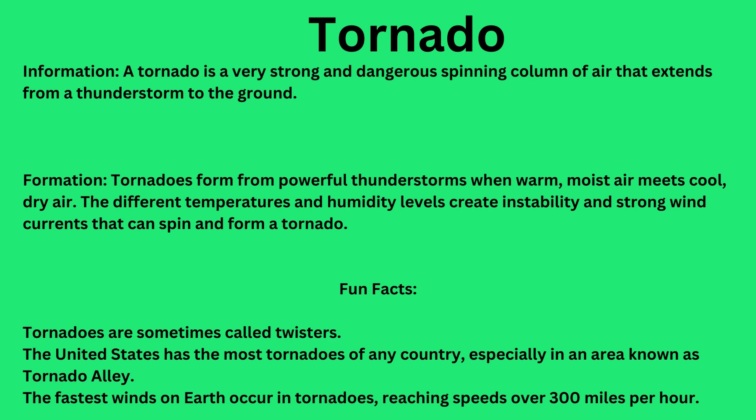Fun facts about tornadoes: Tornadoes are sometimes called twisters. The United States has the most tornadoes of any country, especially in an area known as Tornado Alley. The fastest winds on Earth occur in tornadoes, reaching speeds over 300 miles per hour.